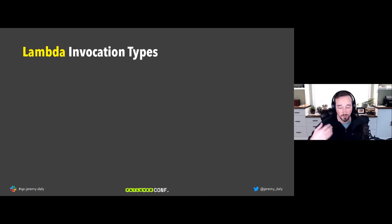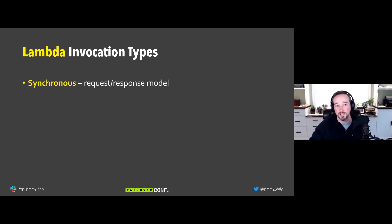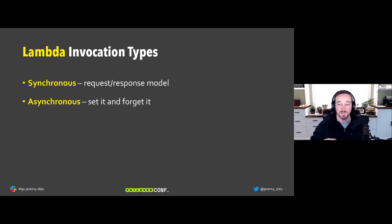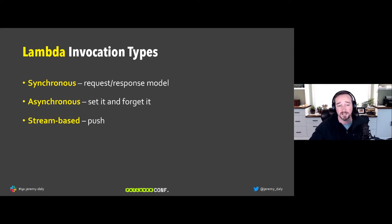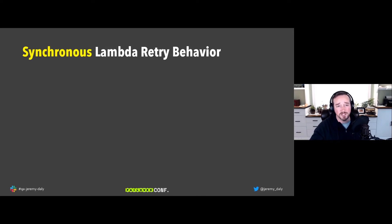There are four ways to invoke a Lambda function. Synchronous: request/response — I make a request, it processes, data comes back. Asynchronous: an event gets captured by EventBridge, SQS, or another service, the client disconnects, and downstream processing happens after the fact. Stream-based: a stream or service pushes data into Lambda. Poll-based: a polling service attaches to an SQS queue, downloads messages, and pushes them into Lambda.